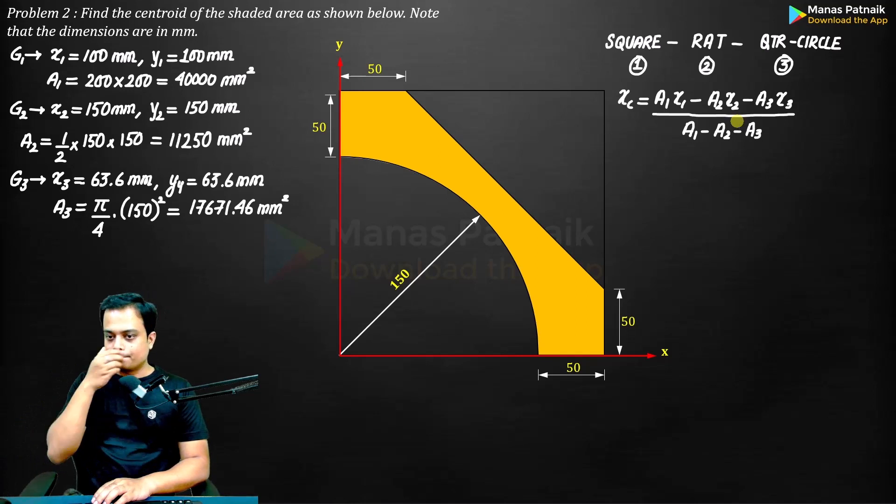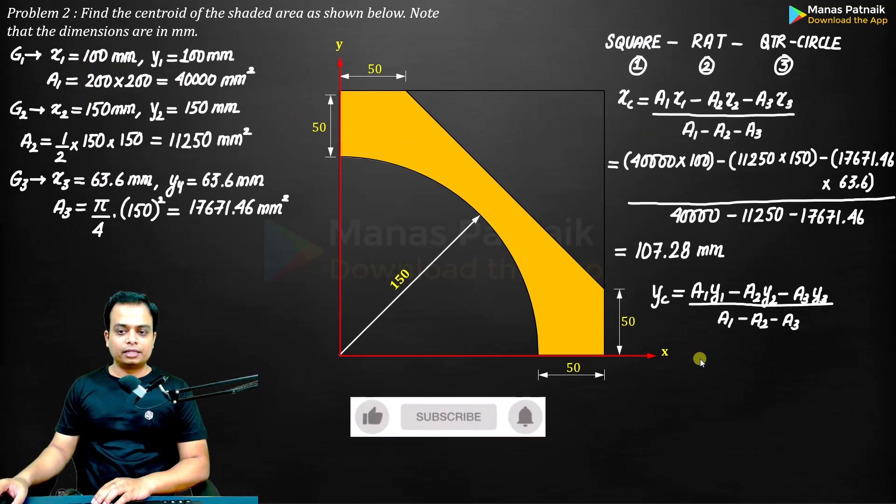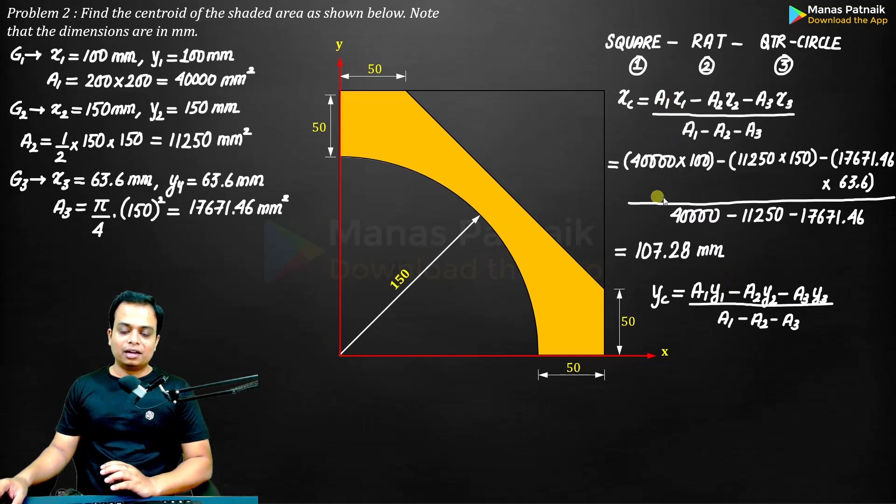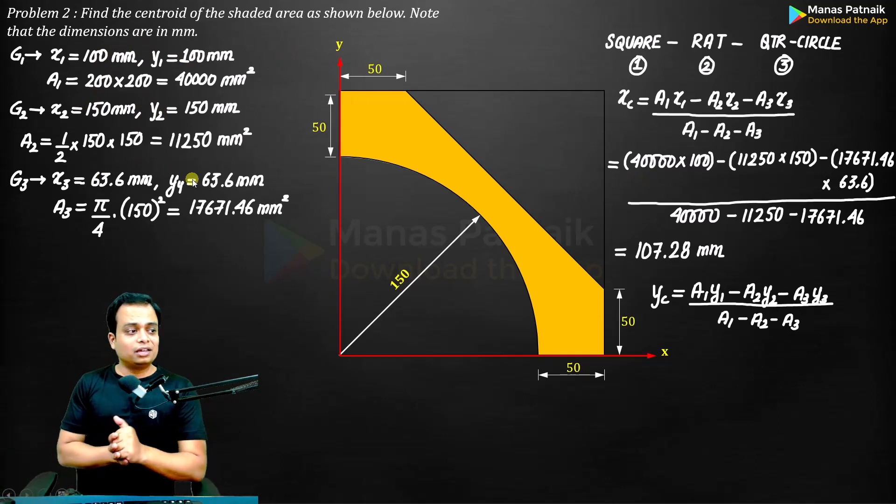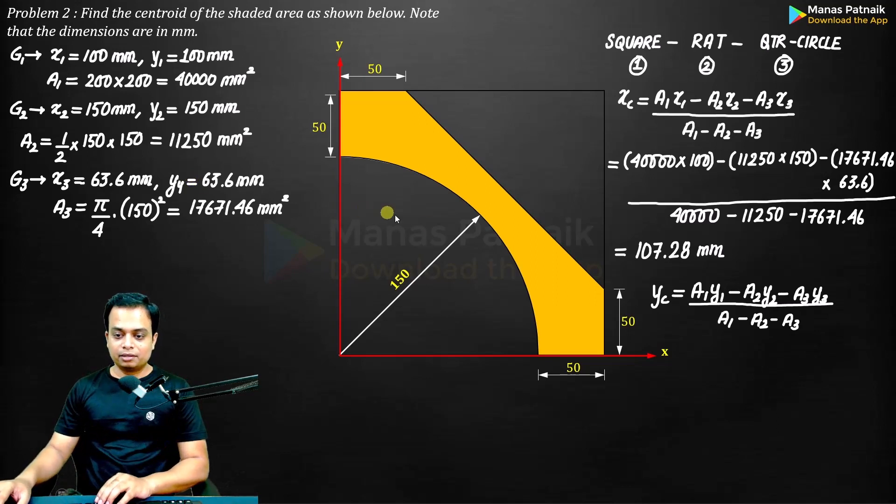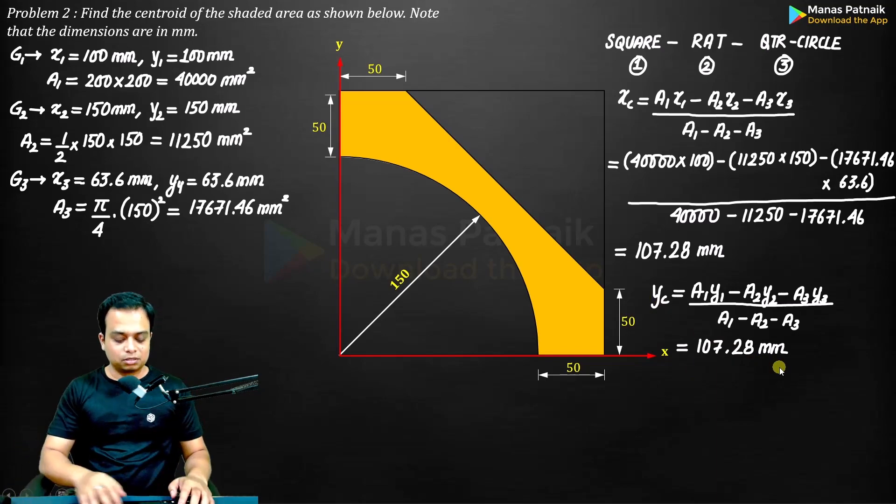Plug in the values. You have all of these values. Plug it in. This is what you get, and that's for y_c. Replace all the x by y and this is what you get. Again, as you can see, x₁, y₁, x₂, y₂, x₃, y₃ coincidentally have the same magnitude, so it will make no difference. You are going to get the same value of y_c as 107.28, and that's it. So simple. Thank you very much.